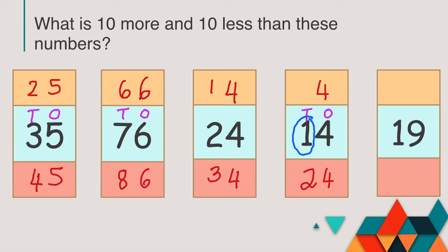Similarly, 10 more than 19 is 29 and 10 less than 19 would be 9 because we have only 1 ten and that would be taken away. Very good.